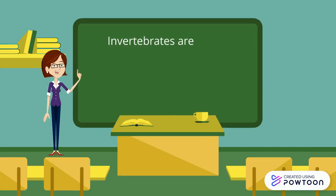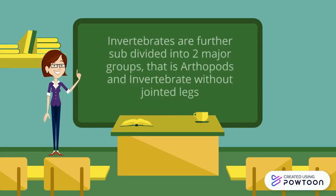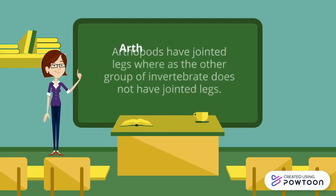Invertebrates are further subdivided into two major groups: arthropods and invertebrates without jointed legs. Arthropods have jointed legs, whereas the other group of invertebrates does not have jointed legs.